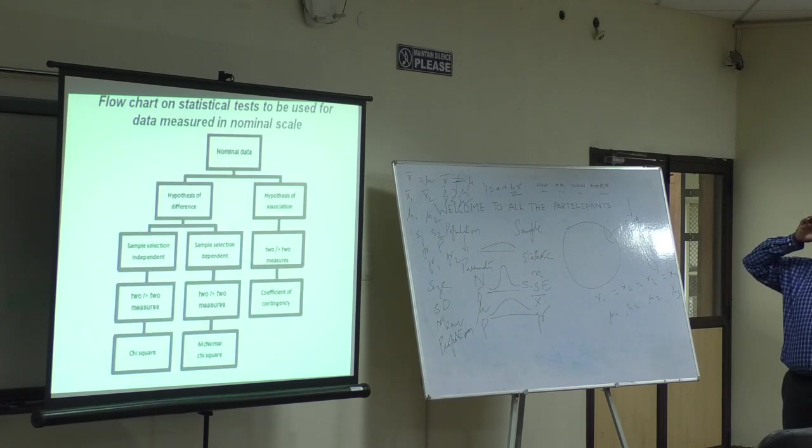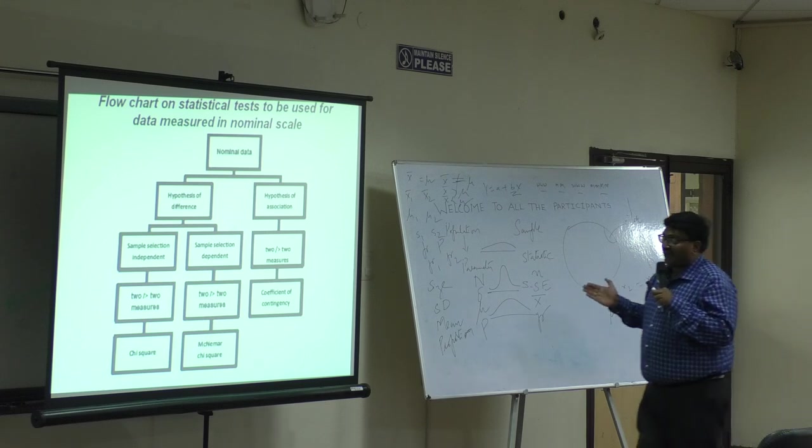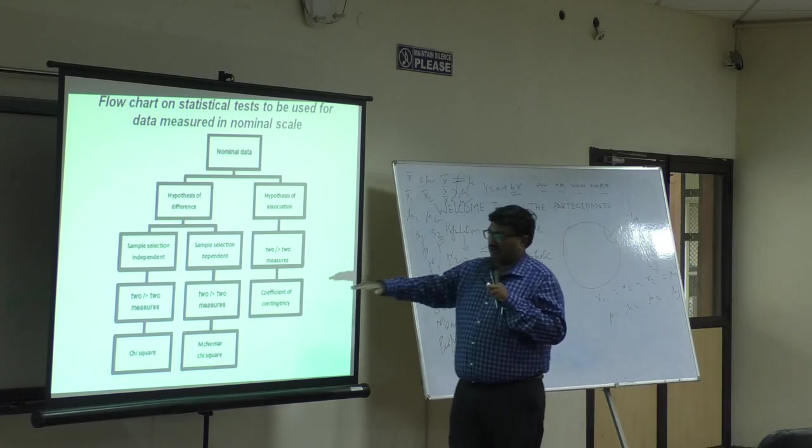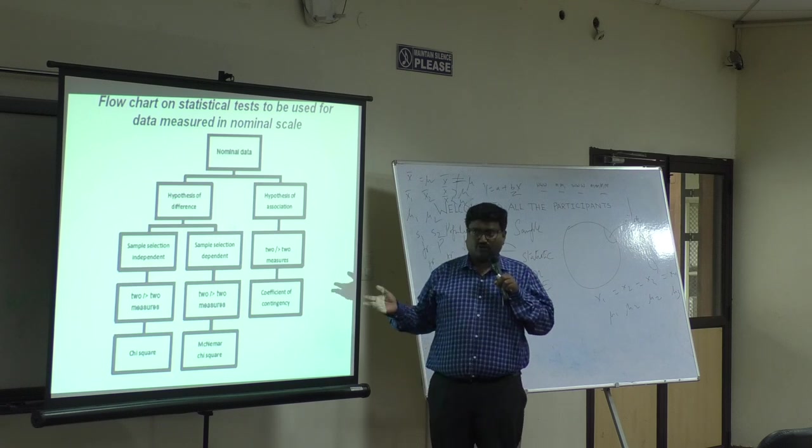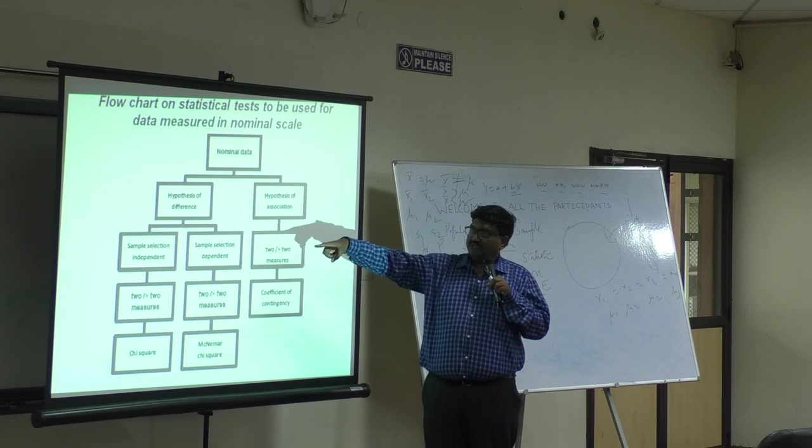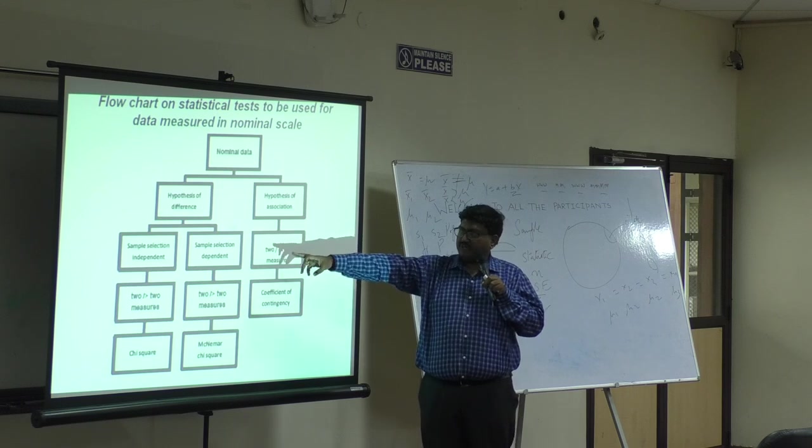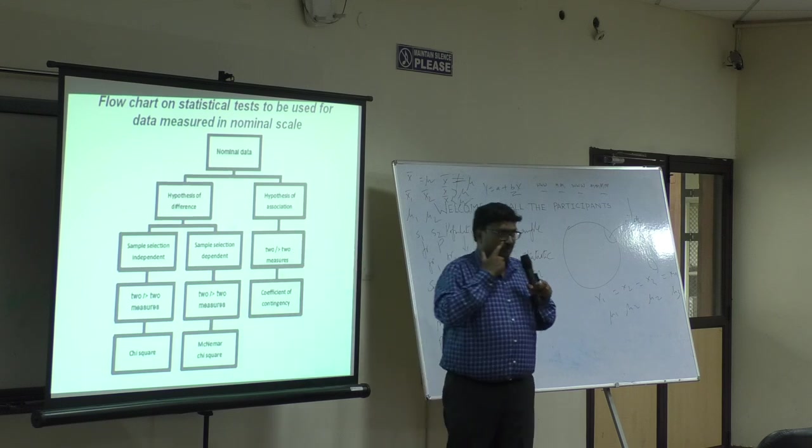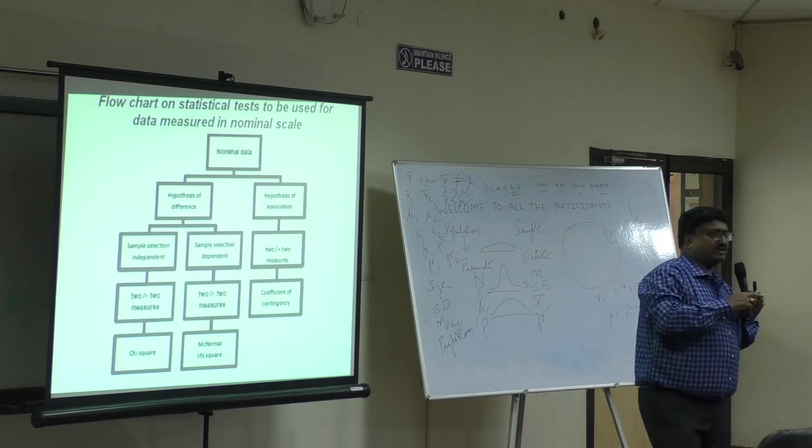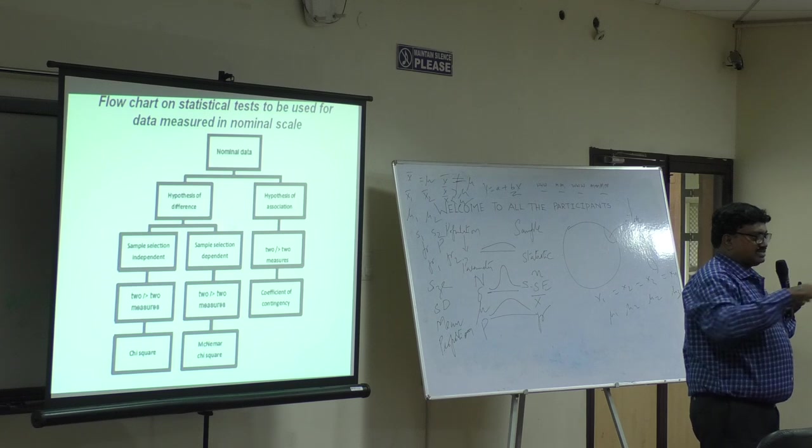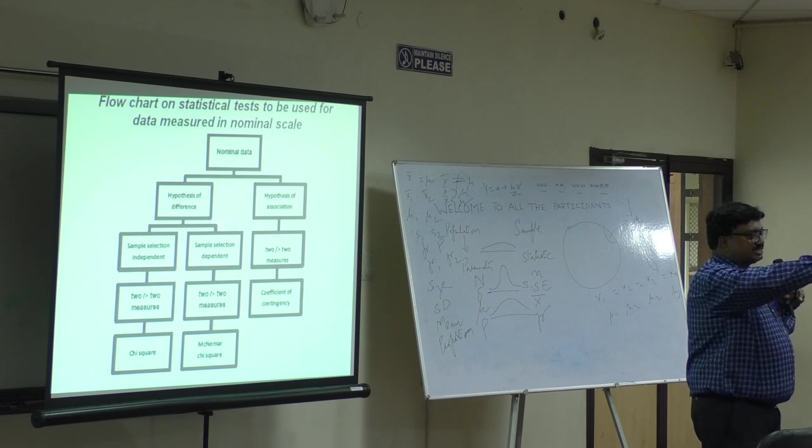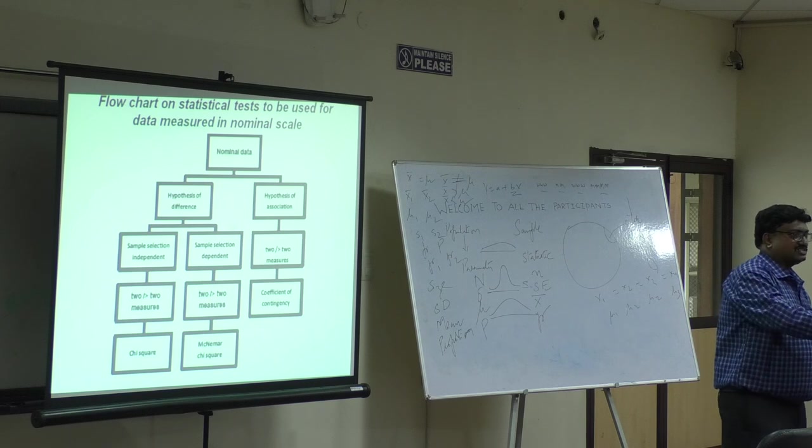Now if it is nominal, whether it is hypothesis of difference or hypothesis of association. Whether it is having more than two measures, then you have coefficient of contingency, Yule's method and all those things. If it is hypothesis of difference, is the sample selection independent or dependent? What do I mean? If I select this boy, it does not affect the selection of others. That is independent.